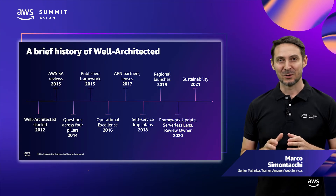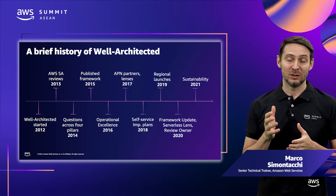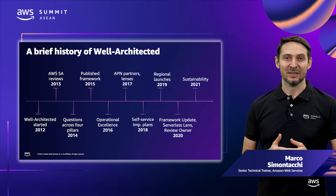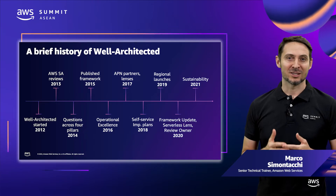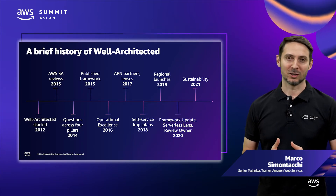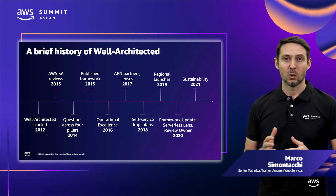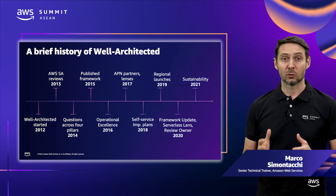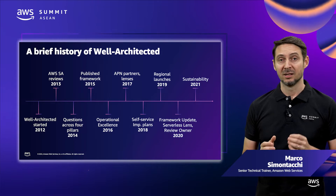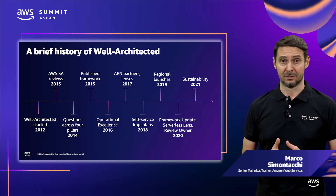AWS started asking 'are you Well-Architected?' in 2012. In 2013, we asked Solutions Architects to start conducting reviews of customer workloads. In 2014, questions across four pillars — security, reliability, performance, and cost optimization — were added.